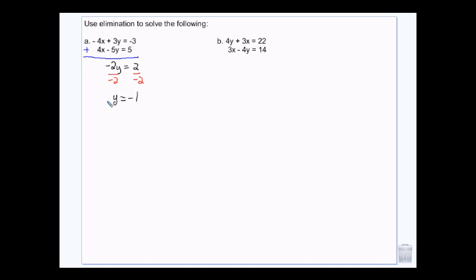Divide by negative 2 and you get Y is negative 1. Then I plug that in at the top somewhere. We'll do the second this time. So 4X minus 5Y equals 5. Y is negative 1. 4X plus 5 equals 5 minus 5. So 4X equals 0. X is 0.